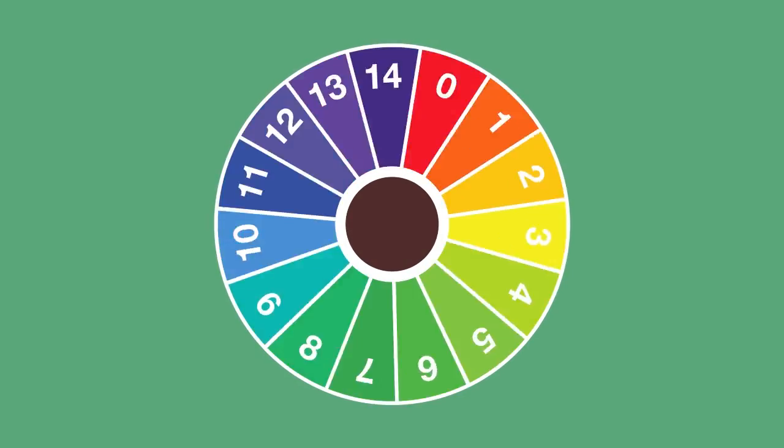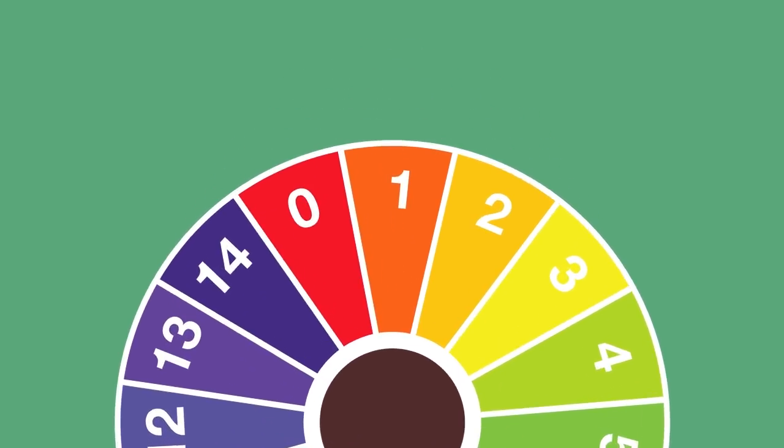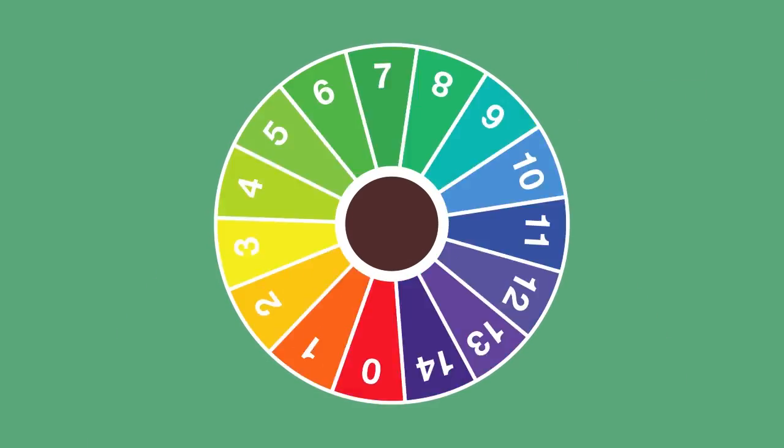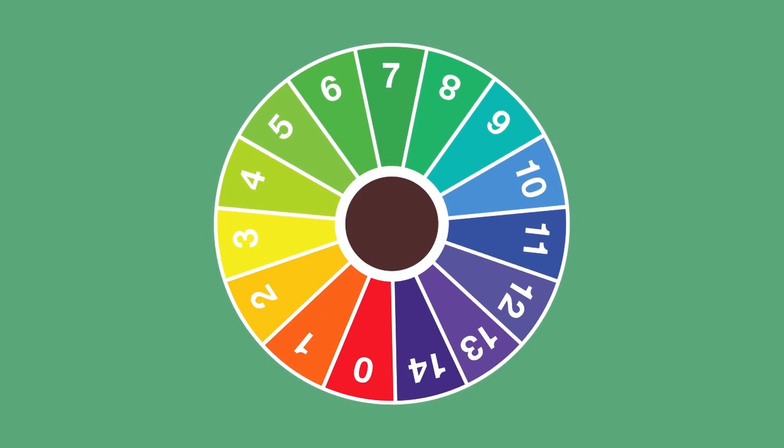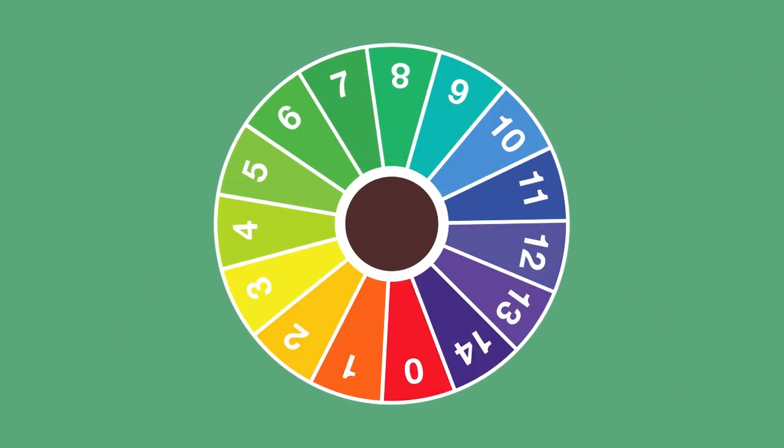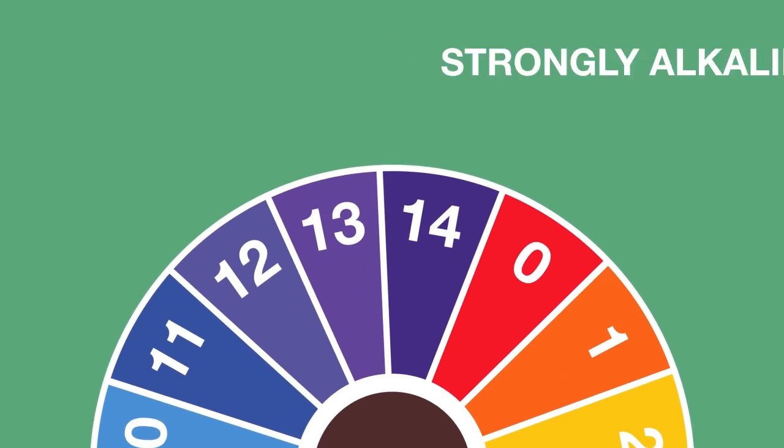If universal indicator solution turns deep red in a solution, it means that the solution is strongly acidic with a pH of 1 to 2. If the universal indicator solution turns green, it means that the solution is neutral with a pH of 7. If the universal indicator solution turns dark blue or purple, it means that the solution is strongly alkaline.